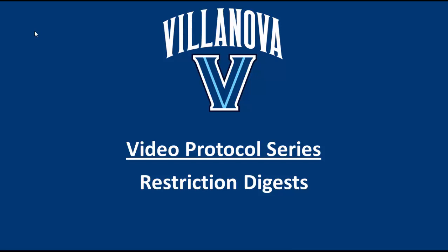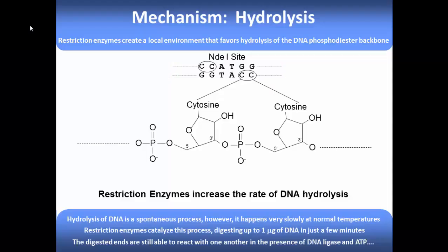In this video we'll be discussing restriction digest. A digest is a reaction in which a restriction endonuclease, otherwise known as a restriction enzyme, is used to cut a piece of DNA at a very specific sequence. For example, if we have an expression plasmid with an old gene that we would like to replace with a new gene, we can use restriction enzymes to cut out the old gene and replace it with our new gene, and that's the type of reaction we'll be talking about in this video.